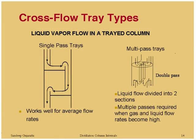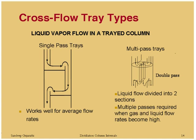In cross-flow trays, single-pass trays have liquid flowing across the tray only once along one flow path. In a multi-pass tray, such as a two-pass tray, liquid comes from two side downcomers of the tray above, goes to the center downcomer, and then splits into the two side downcomers again. You can have two-pass, four-pass, or even odd numbers like three-pass trays.